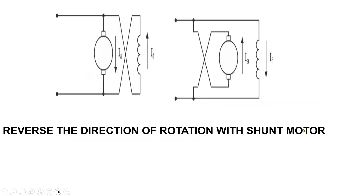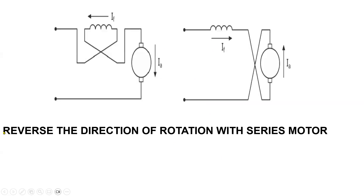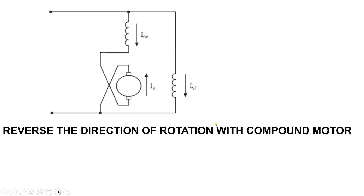If you want to reverse the direction of rotation for a shunt motor, you can reverse across the field winding or across the armature. If you want to reverse the direction of rotation for a series motor, you can reverse the connections across the armature or the field winding, but not both at the same time. For a compound machine, you can reverse the connections across the armature or the field windings, but remember — if you do the field windings, it must be both windings.